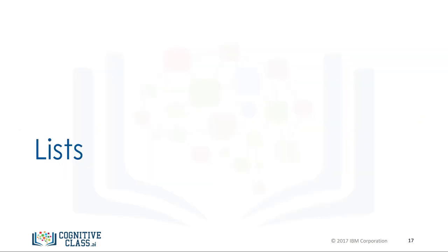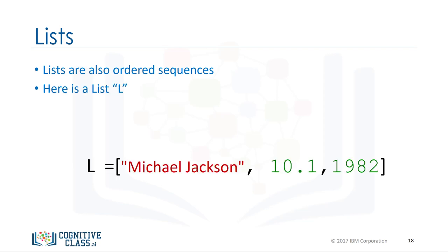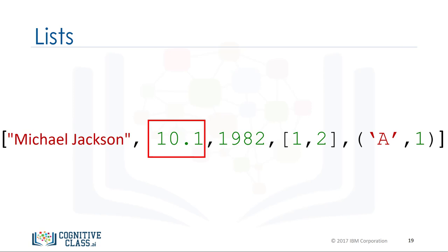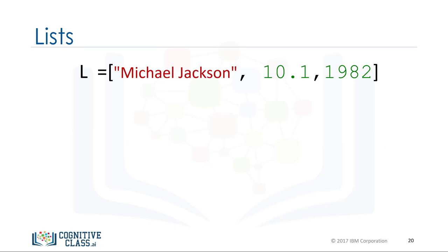Lists are also a popular data structure in Python and are also an ordered sequence. Here is a list L, represented with square brackets. In many respects, lists are like tuples — one key difference is they are mutable. Lists can contain strings, floats, and integers. We can nest other lists, tuples, and other data structures. The same indexing conventions apply for nesting.